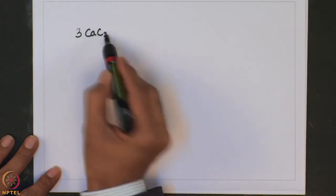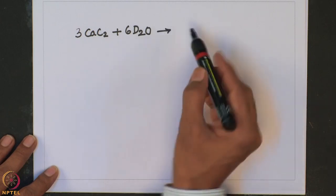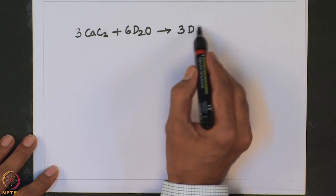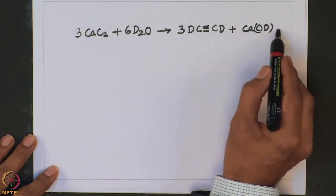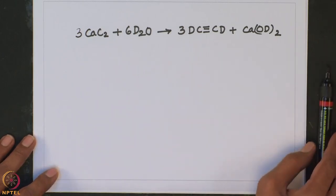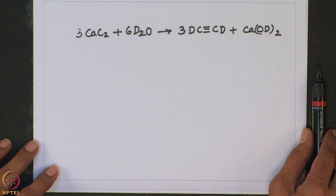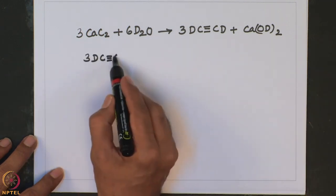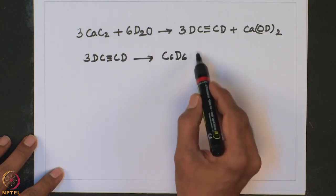For example, consider the reaction between calcium carbide treated with D2O — it forms deuterated acetylene plus calcium deuteroxide. Similarly, once deuterated acetylene is prepared, one can do a 2+2+2 cycloaddition using an appropriate catalyst to generate deuterated benzene C6D6 from three equivalents of deuterated acetylene.